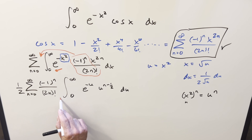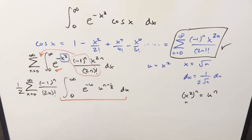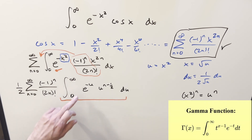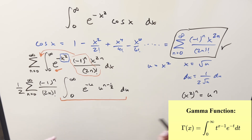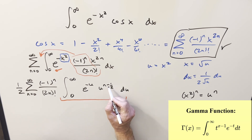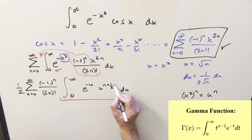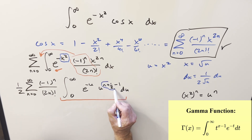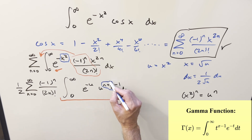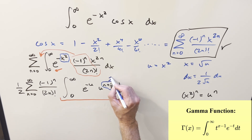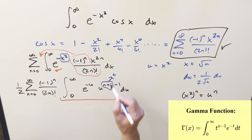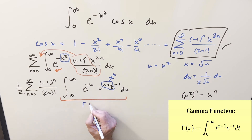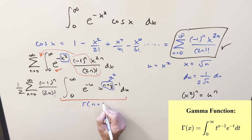Now we notice our integral is set up to use the Gamma function. The exponent needs to have a minus 1 in the formula, so adding 1 to (n - 1/2) gives n + 1/2, and we subtract 1 to match the Gamma form. So the input to the Gamma function is n + 1/2, and this whole integral boils down to Γ(n + 1/2).